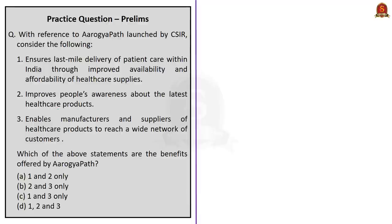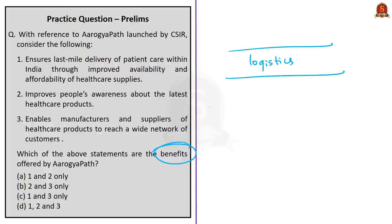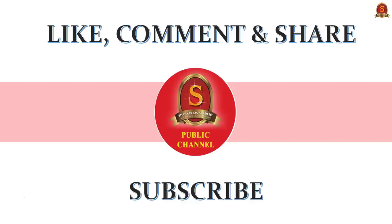The fifth question is about Arogya Path, recently launched by CSIR, with three statements about its benefits. Statement 1 — 'ensures last-mile delivery of patient care through improved availability and affordability of healthcare supplies' — is correct. Statement 2 — 'improves people's awareness about the latest healthcare products' — is also correct. Statement 3 — 'enables manufacturers and suppliers of healthcare products to reach a wide network of customers' — is also correct, as the supply chain portal overcomes gaps in connectivity between manufacturers, suppliers, and customers. The correct answer is option D (1, 2, and 3 — all three are benefits). This concludes today's The Hindu news analysis. If you like the video, click the like button, comment, share, and subscribe to Shankar IAS Academy's YouTube channel.